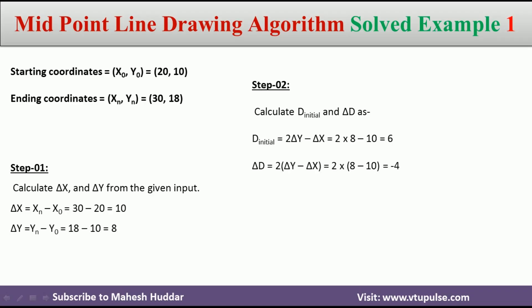In step number 2, we calculate two parameters: d_initial and delta_d. d_initial is equivalent to 2 times delta_y minus delta_x, which is equivalent to 6. Delta_d is equivalent to 2 times delta_y minus 2 times delta_x, which is equivalent to minus 4. These are the two parameters which will help us find all the points between the starting and end points.